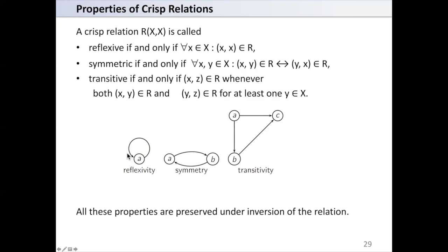For reflexivity, each node has an arc from itself to itself. For symmetry, if there is an arc from A to B there must be an arc from B to A. For transitivity, if there is an arc from A to B and from B to C, then there must be an arc from A to C. All these properties are preserved under inversion of the relation.